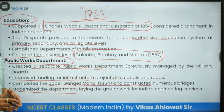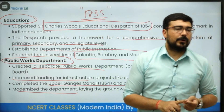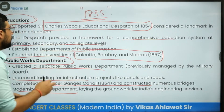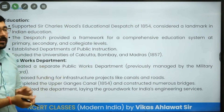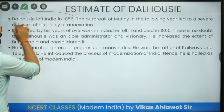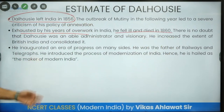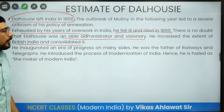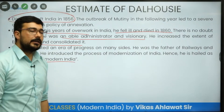Dalhousie was in many ways the founder of modern India — significant achievements can be linked to him in education, the Public Works Department, railways, and the telegraph and communication system. He left India in 1856, exhausted by years of overwork, and died by 1860. He was an able administrator and visionary who increased the extent of British India, consolidated it, and inaugurated an era of progress. He is hailed as the maker of modern India. When he introduced railways, he said, 'I am giving railways to the bulakkaat civilization.'